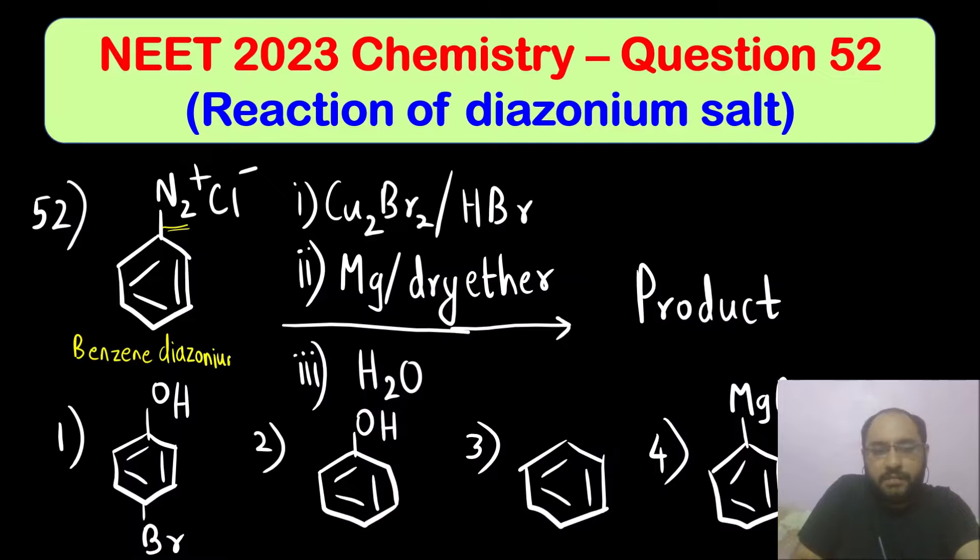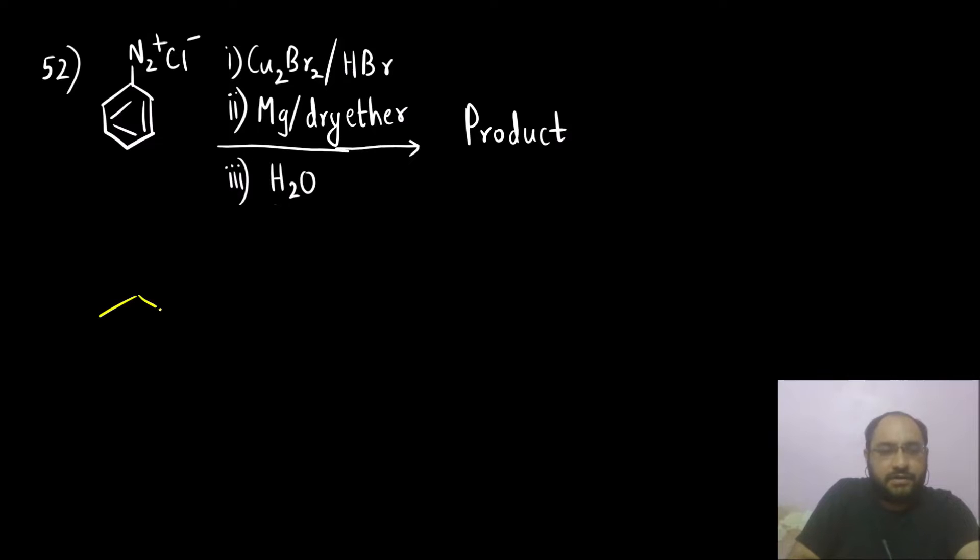Diazonium chloride and there are three reagents that are given and what we have to do is we have to identify the product. Let us start with the drawing the structure of benzene diazonium chloride.